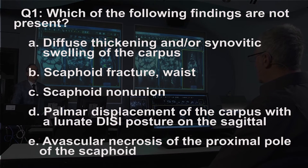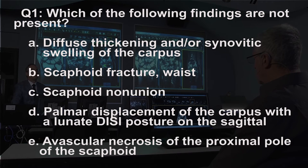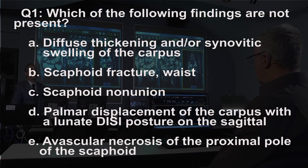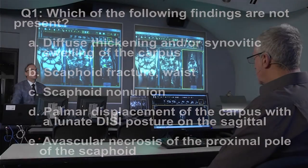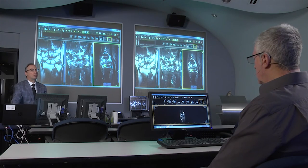First question: which of the following findings are not present? A, diffuse thickening and/or synovitic swelling of the carpus. B, scaphoid fracture of the waist. C, scaphoid nonunion. D, palmar displacement of the carpus with a lunate DISI posture in the sagittal projection. E, avascular necrosis of the proximal pole of the scaphoid.